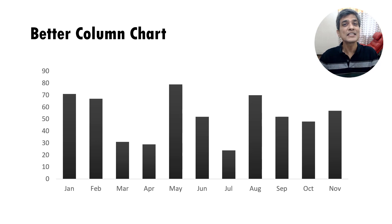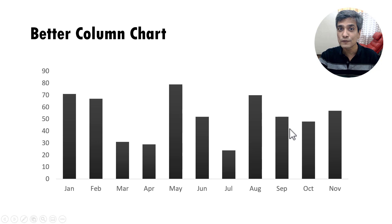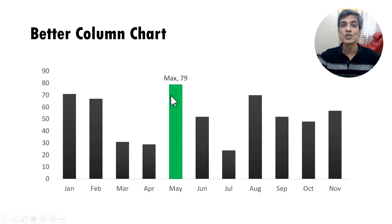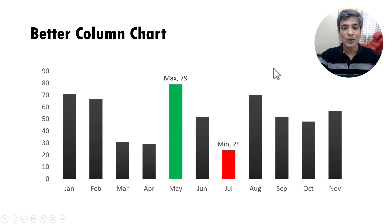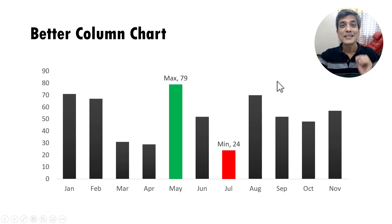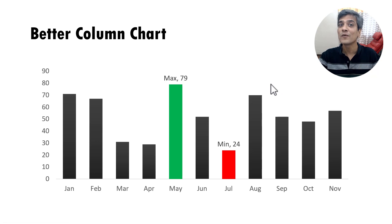Here, instead of just giving the plain vanilla chart, we're going to provide some useful additional information. On a click, we show what is the maximum value, and on a click we show what is the minimum value. The best part is this information gets automatically updated whenever you change the numbers.